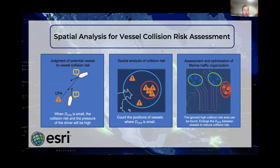When the distance of CPA is very small but the two vessels have not collided, it can be considered that a near-miss accident has occurred. When the DCPA is less than a certain value — for example, 0.5 nautical miles — although there may be neither a collision nor a near-miss accident, it is still considered that there is a great risk of collision between vessels.